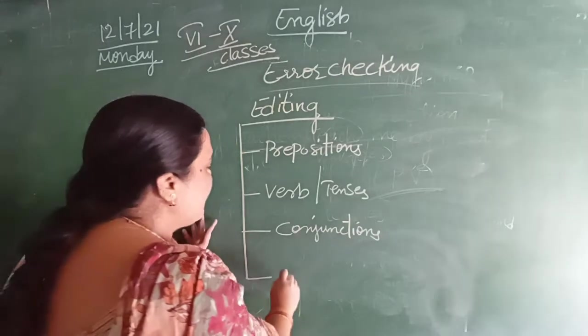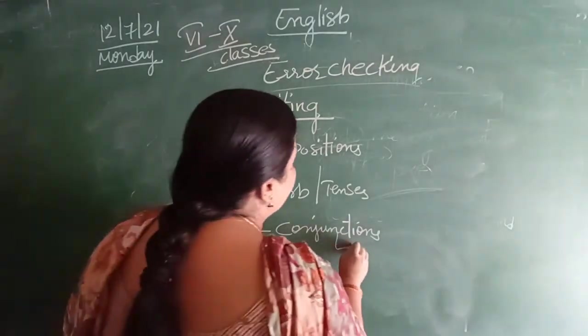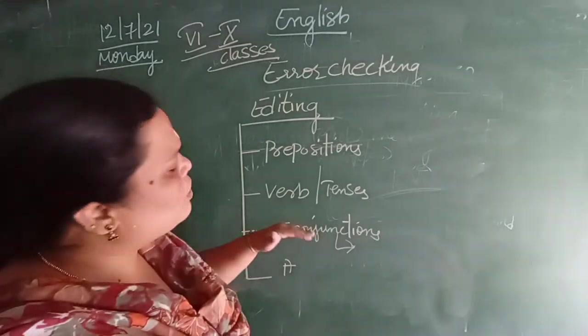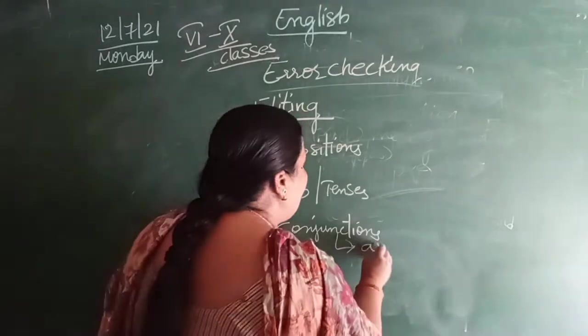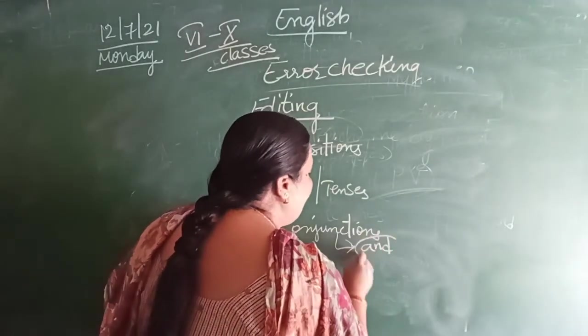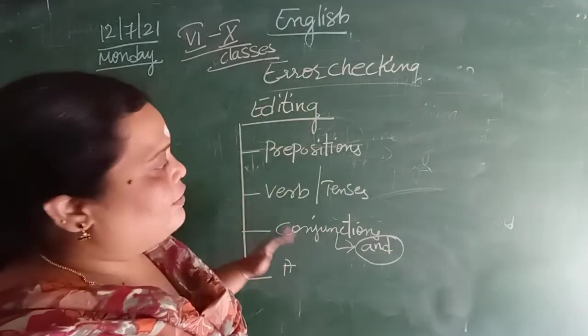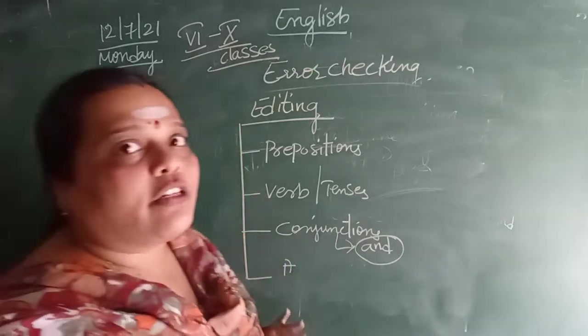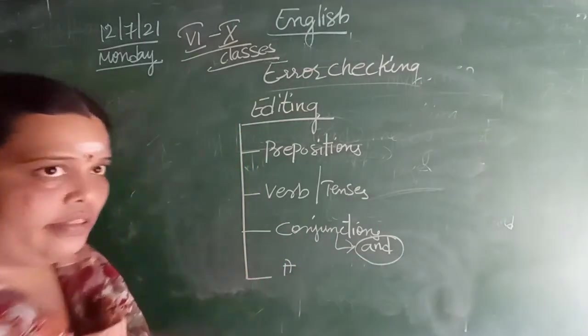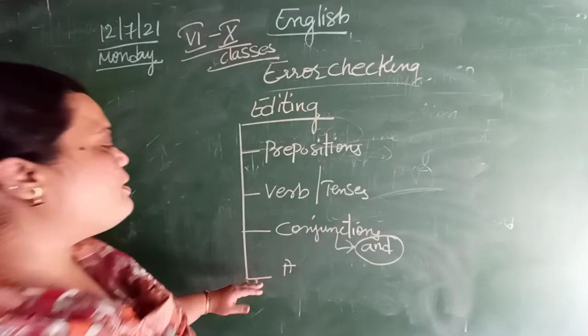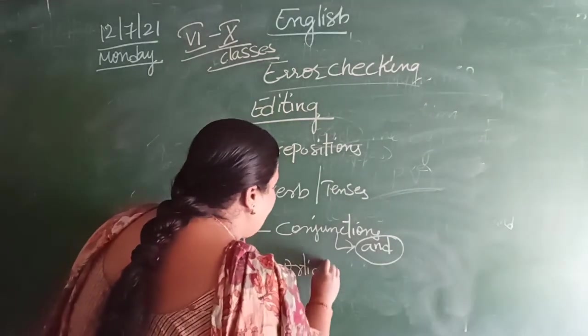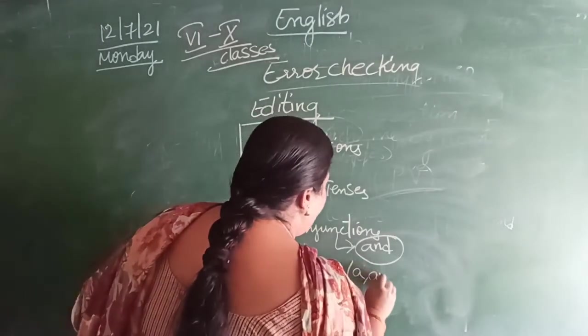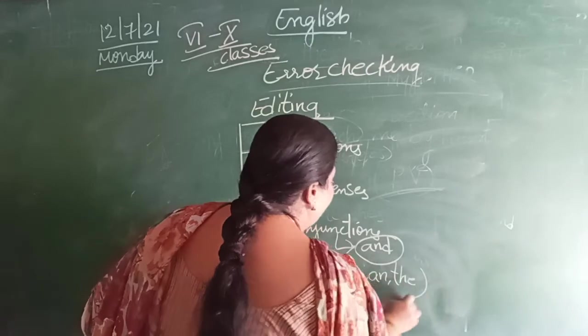Next, the last one is articles. So for conjunctions, mostly in conjunctions there are many conjunctions, but we will be finding errors mostly for and, the word and, A-N-D. So we have to check that one. The next one is articles. Articles, you all know. So what are articles here? A, An, and The.